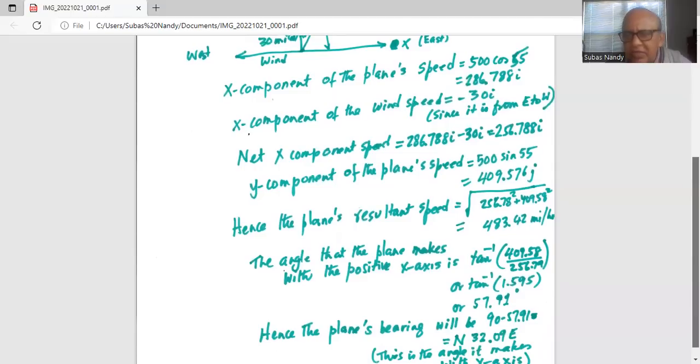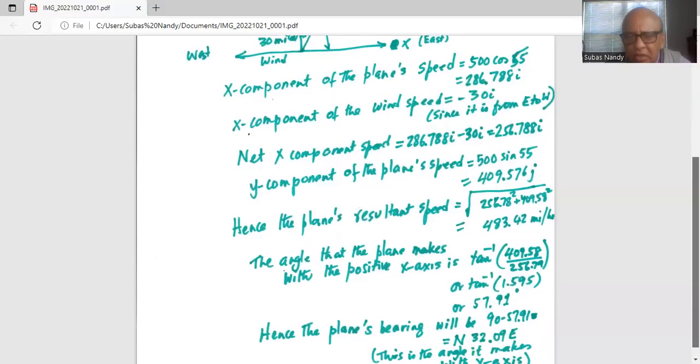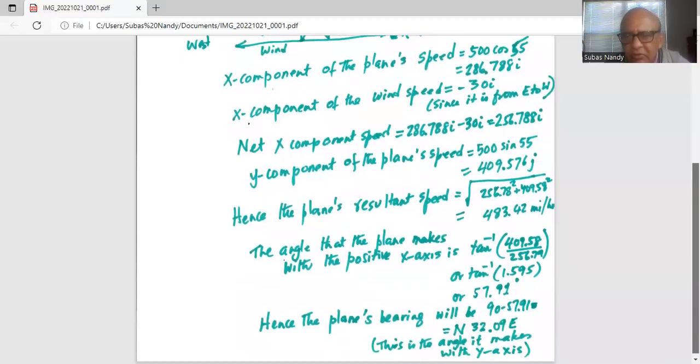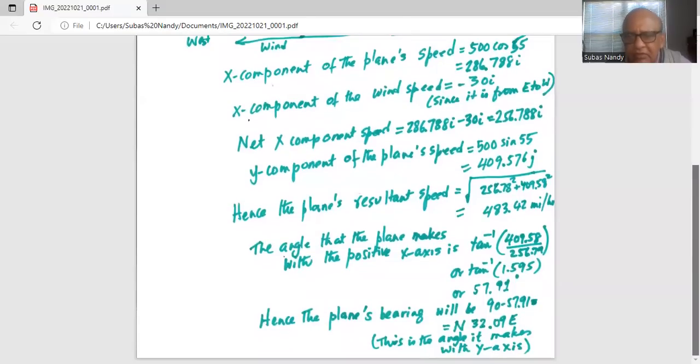This is the angle the plane makes with the positive x-axis. So the plane's bearing, which is the angle from the y-axis, is 90 minus 57.91, which is north 32.09 in the east direction. Its resultant speed is 483.02 miles per hour and its bearing is north 32.09 in the east direction.